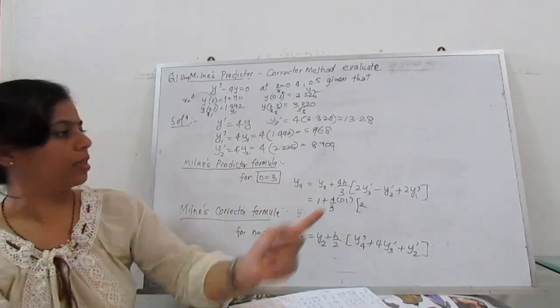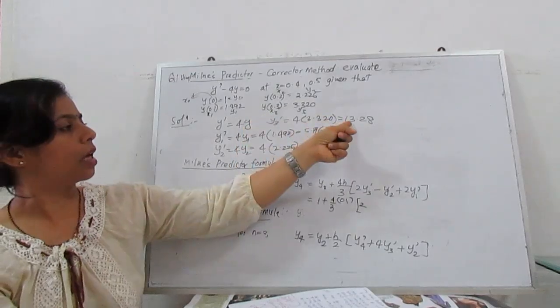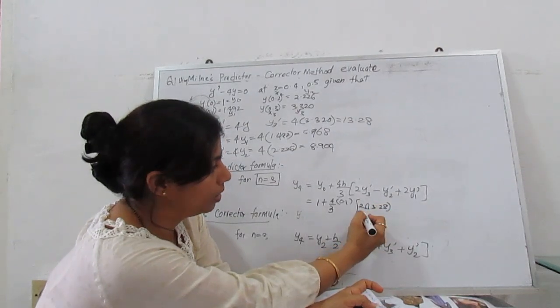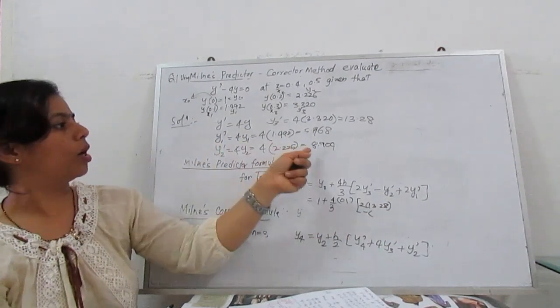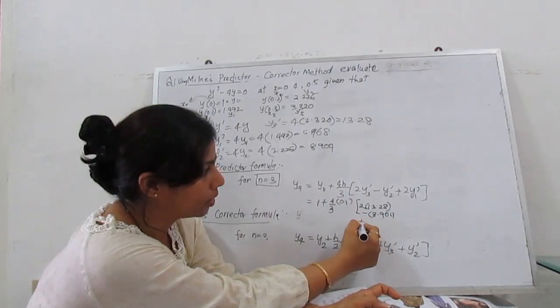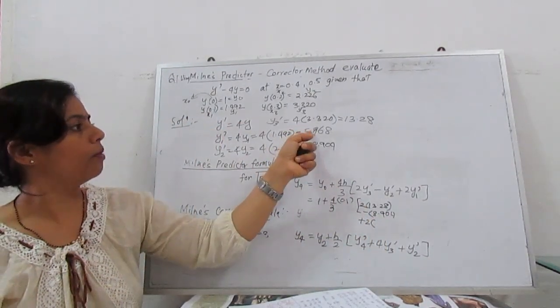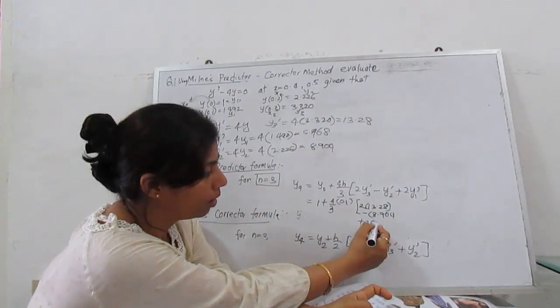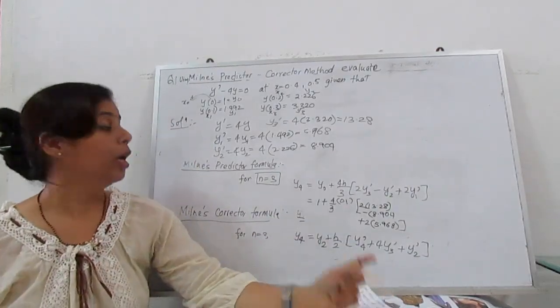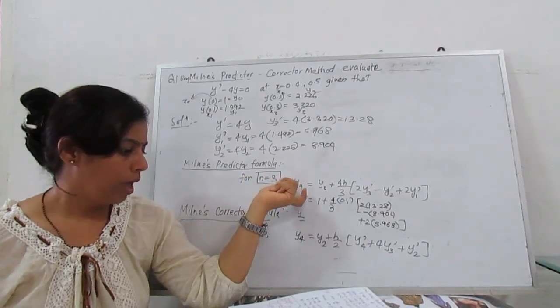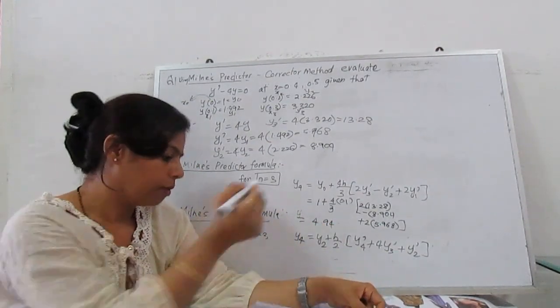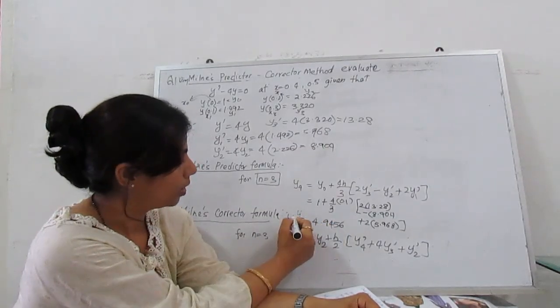So that is 0.1 times [2 times y'₃, where y'₃ is 13.28, so 2 × 13.28 minus y'₂, which is 8.904, plus 2 times y'₁, which is 5.968]. When you simplify and calculate it, you will get the value of y₄, and y₄ is 4.9456.